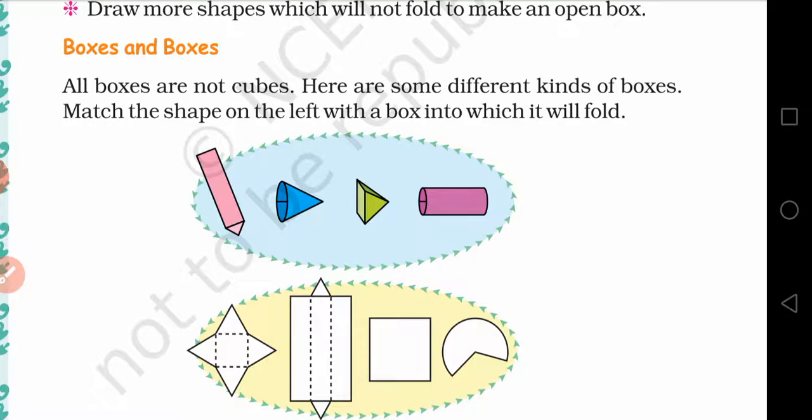In this topic we are going to learn how a box looks when it is opened. If any box or any plastic box we open all the way, we see how it looks and which shape, when folded, makes the box — that is the main concept of this topic.